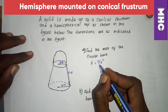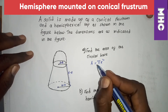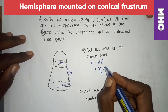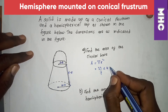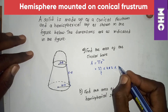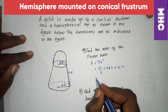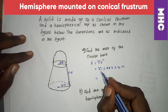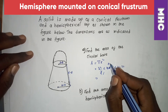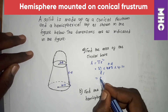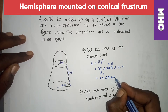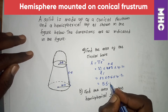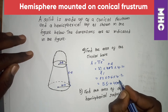We use π as 22/7. Therefore: (22/7) × 4.2 × 4.2. Simplifying, (1/7) of 4.2 gives 0.6, then 22 × 0.6 × 4.2 = 55.44 cm². That is the area of the circular base.